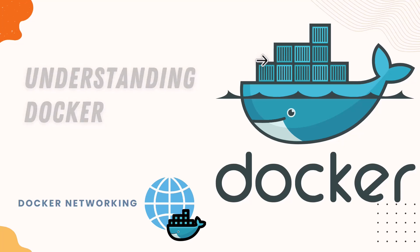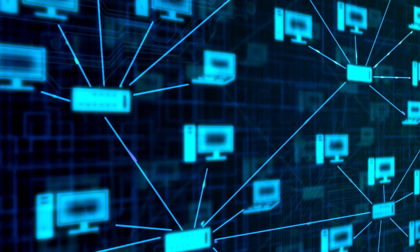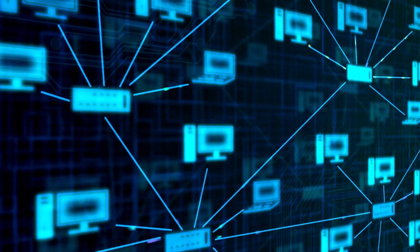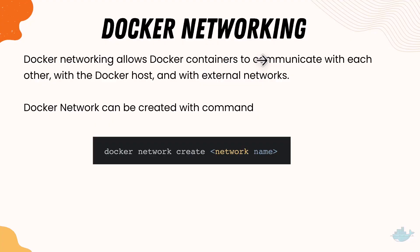In this lecture we'll be talking about Docker networking. Docker networking allows Docker containers to communicate with each other, with a Docker host, and with external networks. Docker networking is pretty much like how a machine communicates with another network via network cable, and all those networking protocols apply to Docker networks as well. Docker networking is very helpful while you try to communicate between two or more containers.